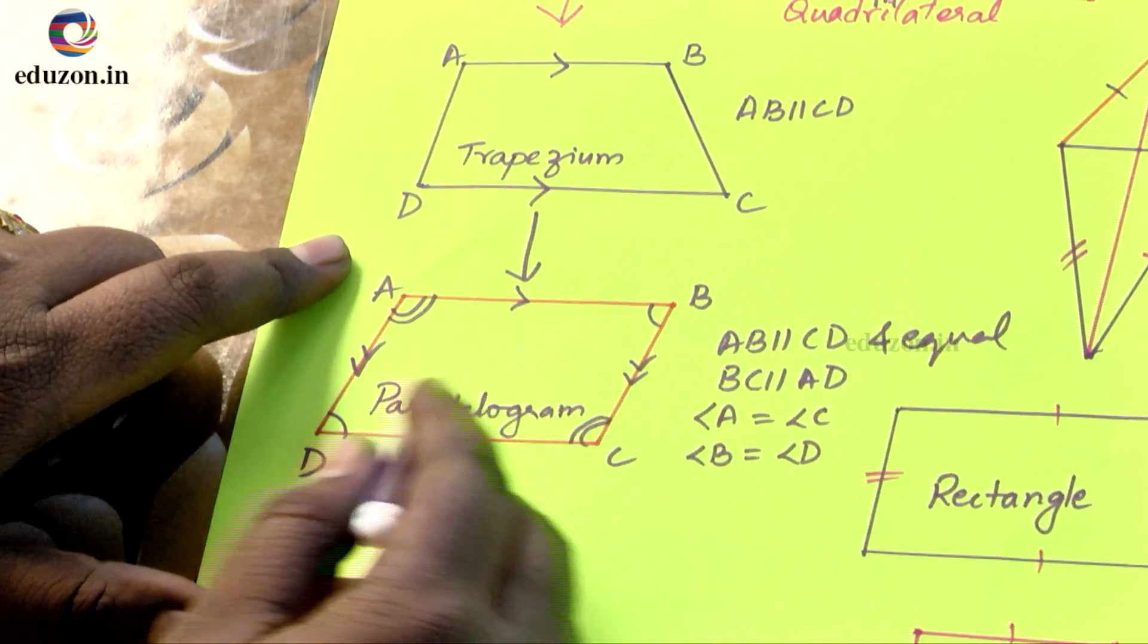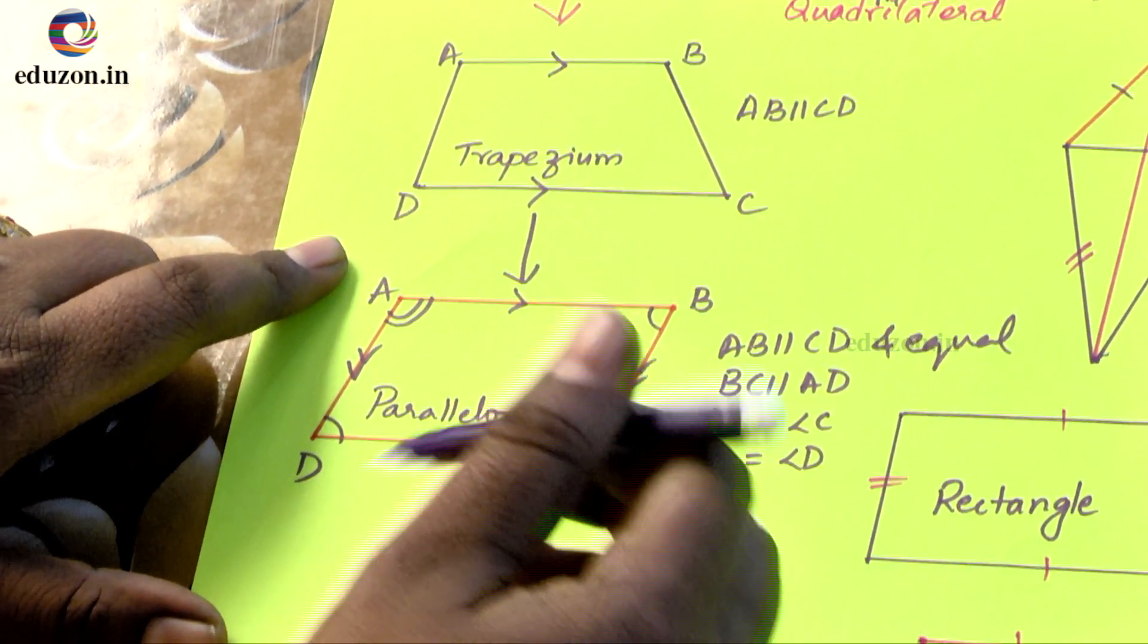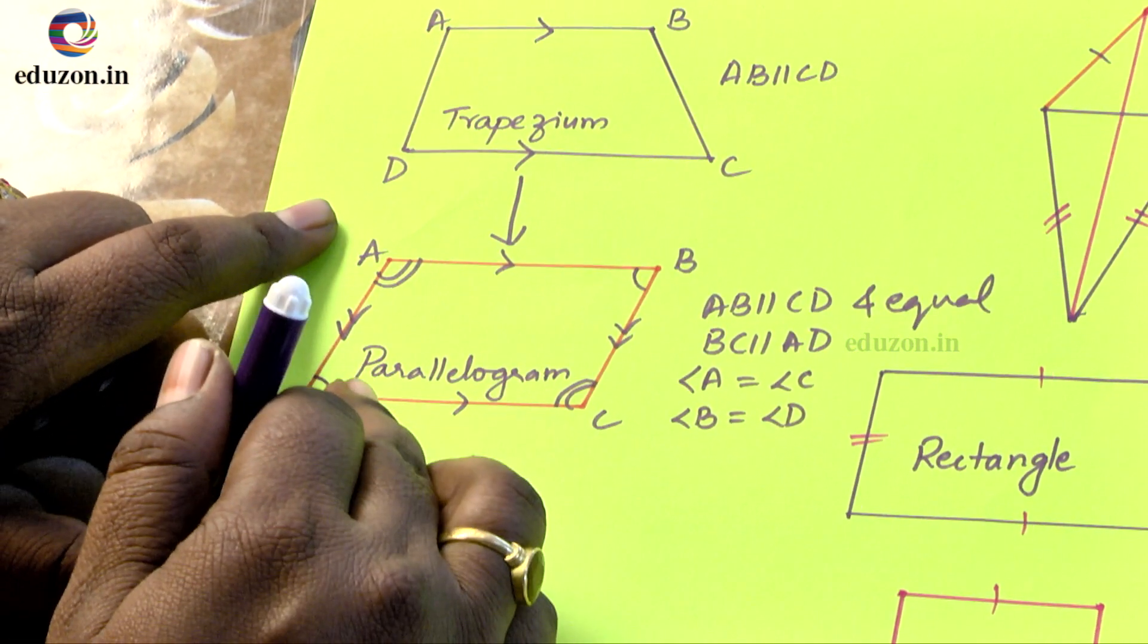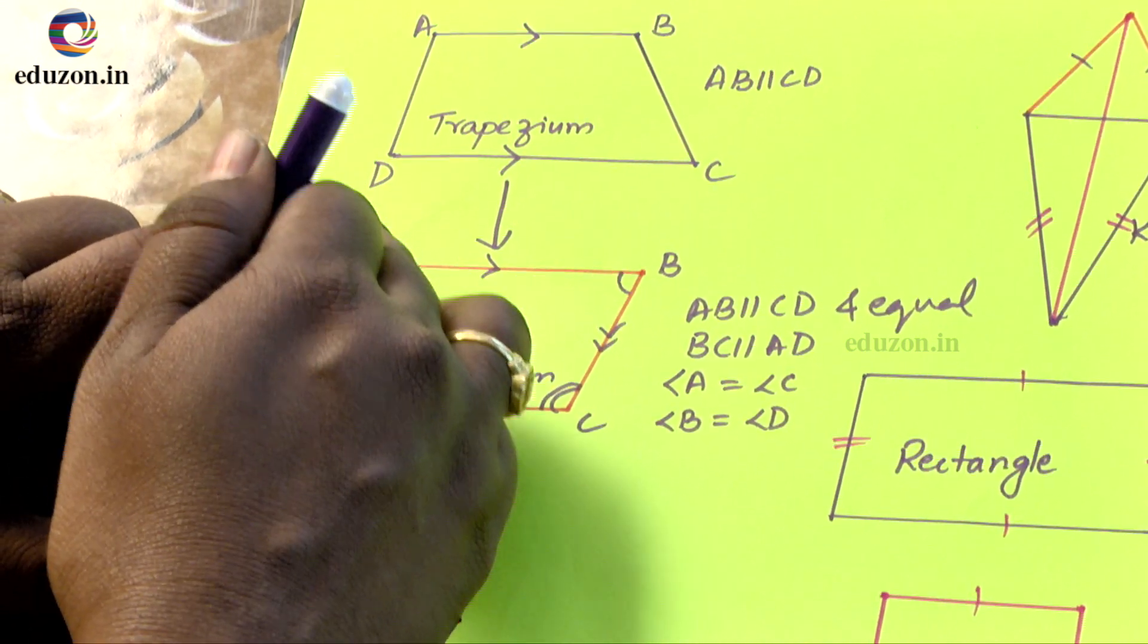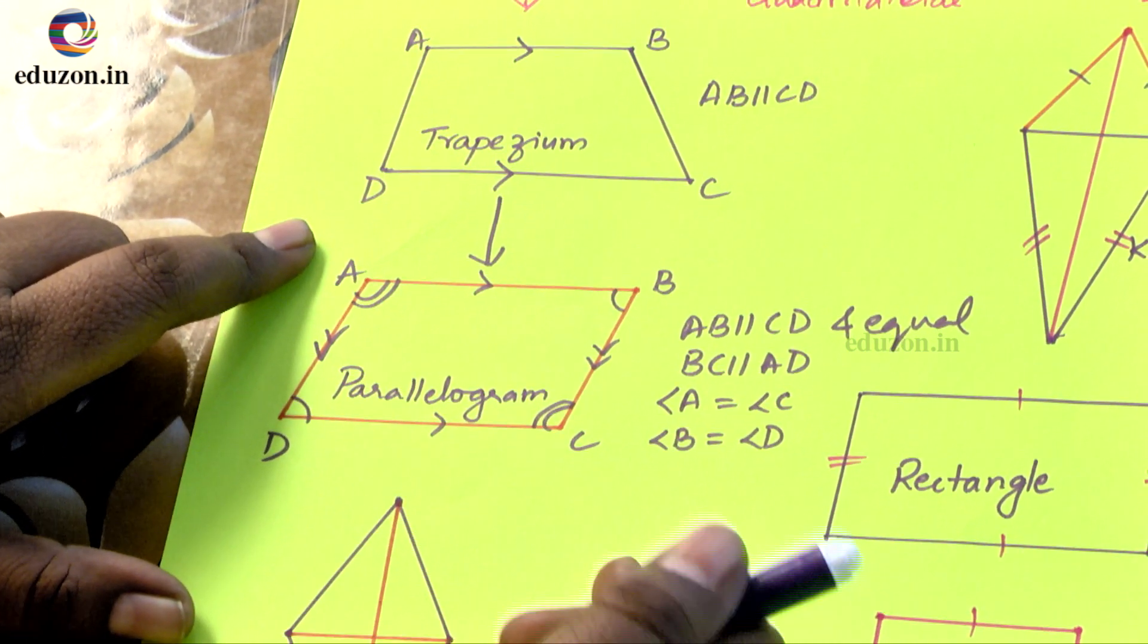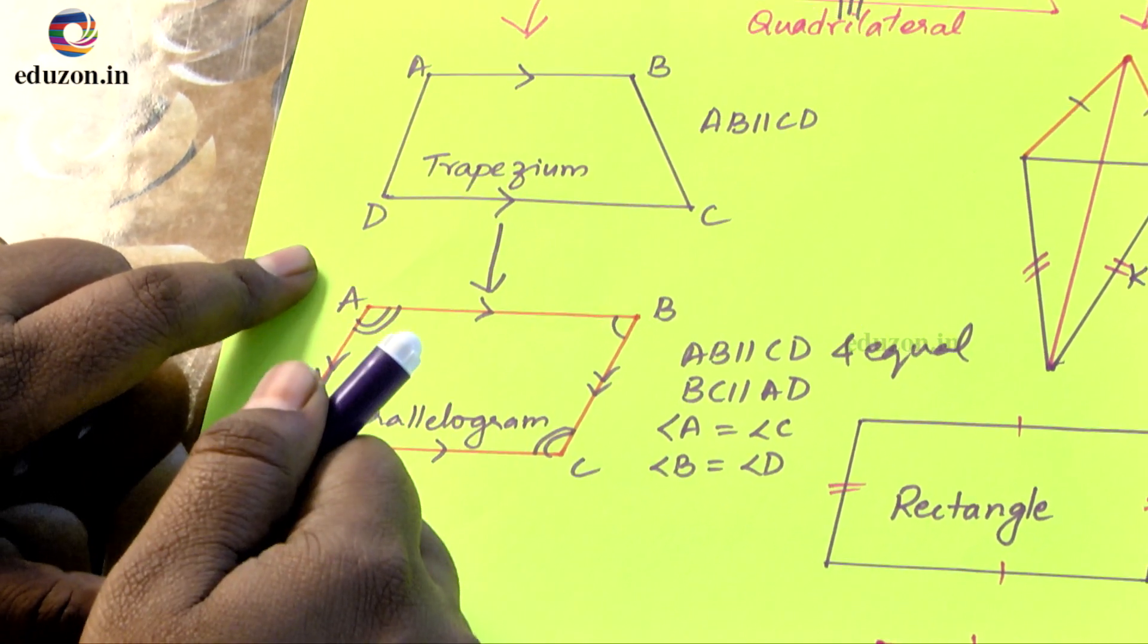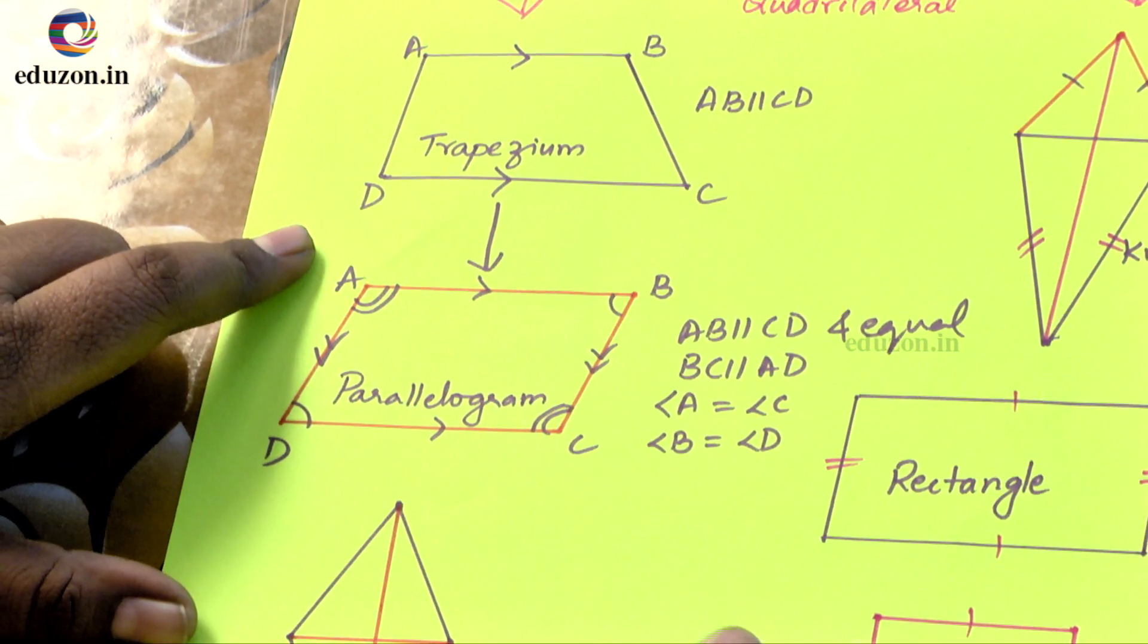Also adjacent angles are supplementary, that means if I add any two adjacent angles in this parallelogram it will become 180 degrees. That means if I add A plus B it will be 180 degrees, B plus C 180, C plus D 180.